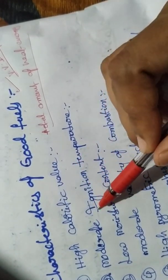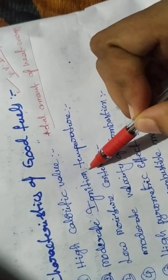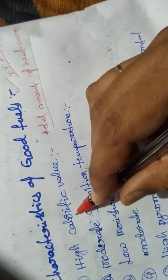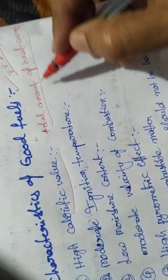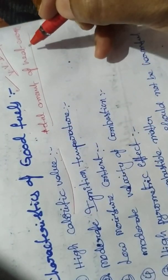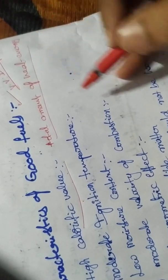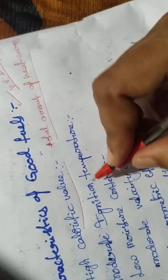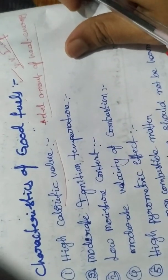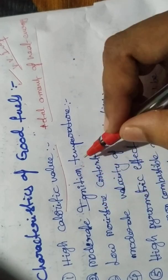Next, coming to the second point: moderate ignition temperature. Calorific value means the total amount of heat energy given by total combustion of fuel. The second characteristic is moderate ignition temperature.